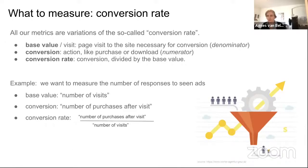For example, if you want to measure the number of purchases after a visit, the base value would be the number of visits and the conversion would be the number of purchases after a visit; the conversion rate is those two values divided. This is useful because one variant might have fewer visits for some reason, and you still want a fair comparison of the purchases per visit.